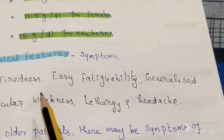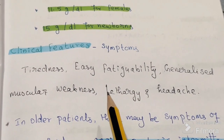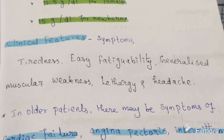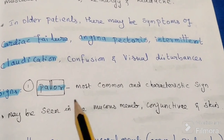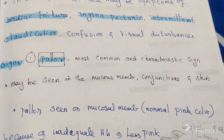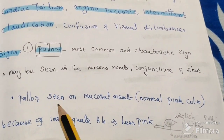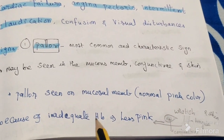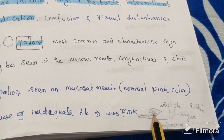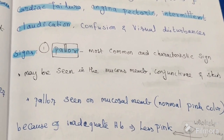In all types of anemia, tiredness, fatigability, muscular weakness, and lethargy are common symptoms. One more important sign is pallor — the most common and characteristic sign. Because of inadequate hemoglobin, the mucous membrane, conjunctiva, and skin become pale. Normally these have a pink color, but because of inadequate hemoglobin there is less pink color, and the conjunctiva, tongue, and skin become whitish. Pallor is the main symptom of anemia.